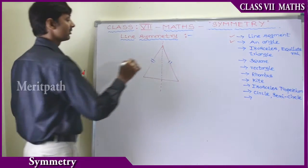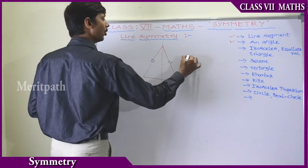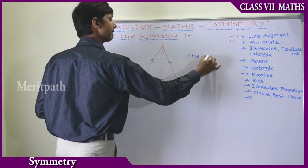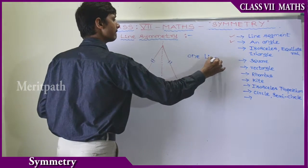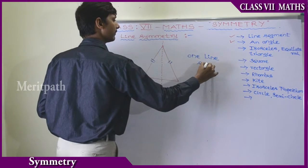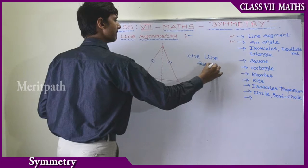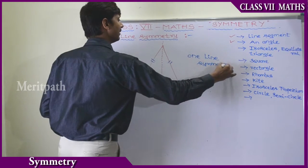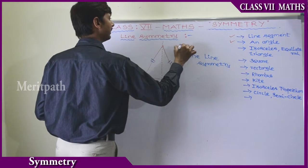So this is for an isosceles triangle. Only one line of symmetry can be drawn for an isosceles triangle.